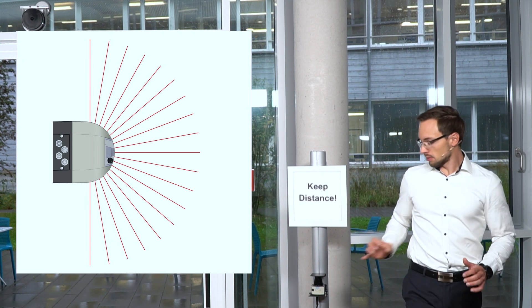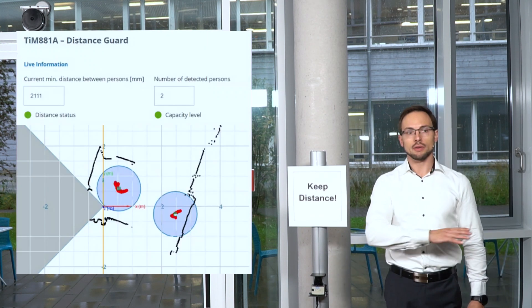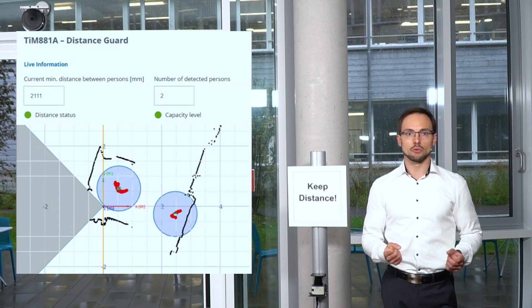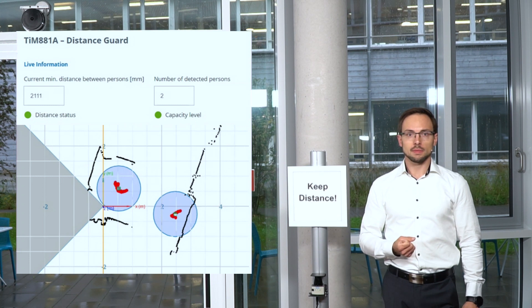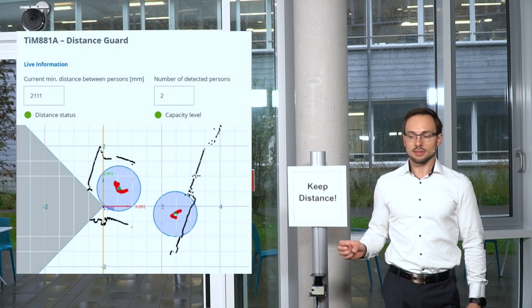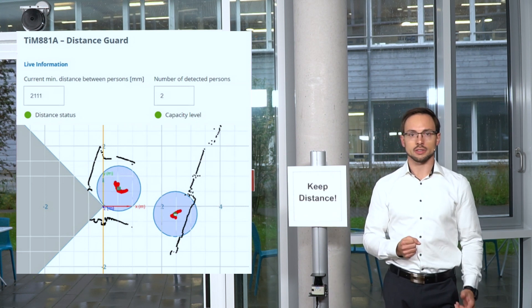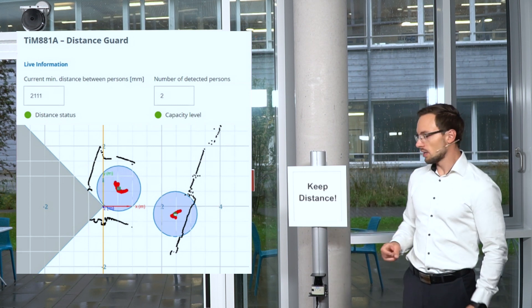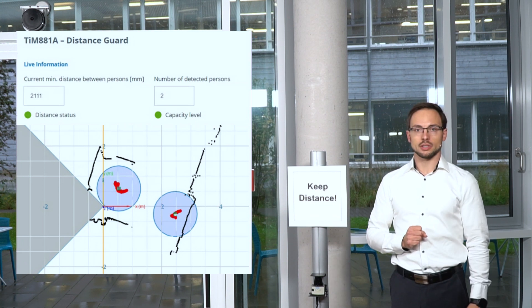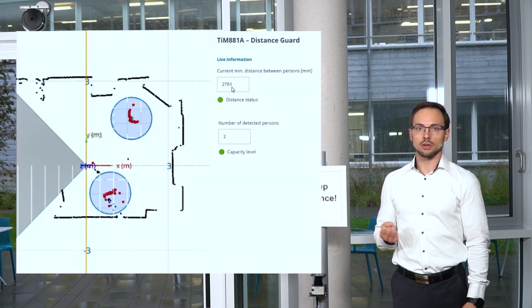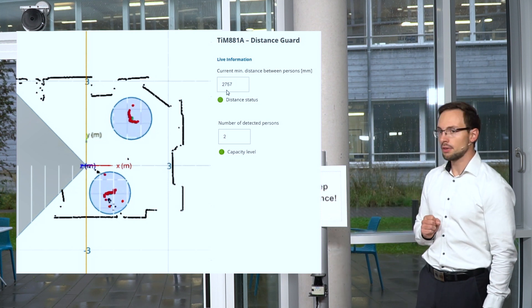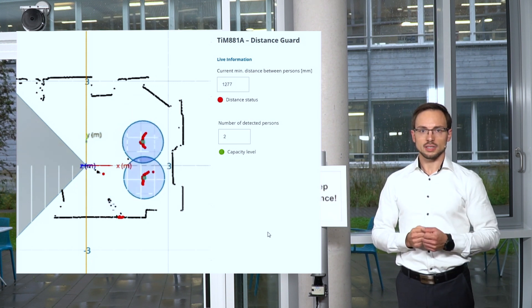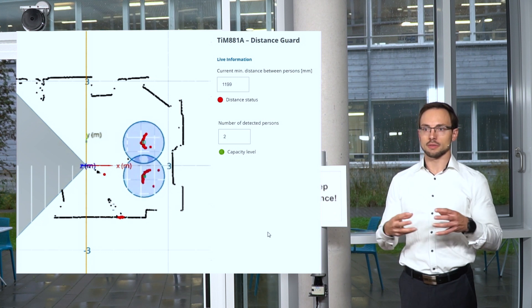For the DistanceGuard we are now able to filter out every stationary object that is the background and only look at the objects that are moving around, the people. Those people are clustered then together and the device is recognizing when a certain width is reached that it is a person, and the blue bubble as we see here now is indicating the distance they should keep to each other. When they are now moving too close to each other as we see in this short video, the minimal distance is going down and when the two circles intersect then we have a breach of the minimal distance.